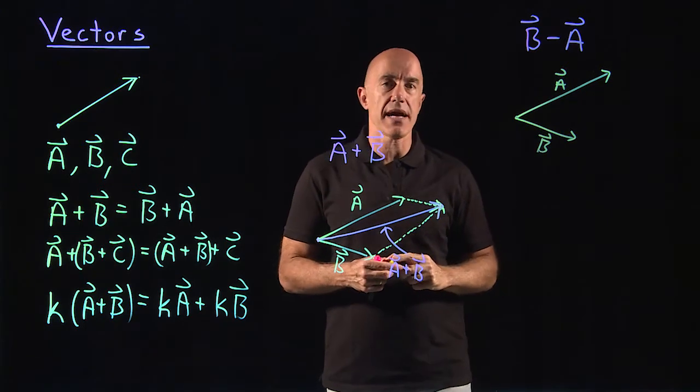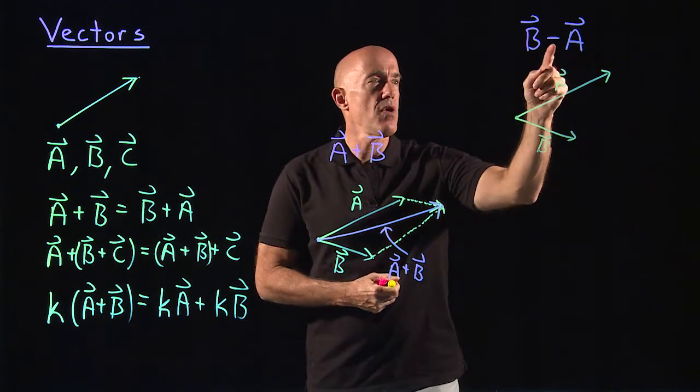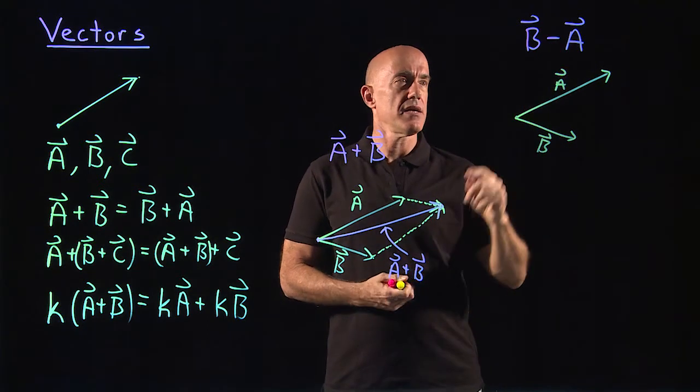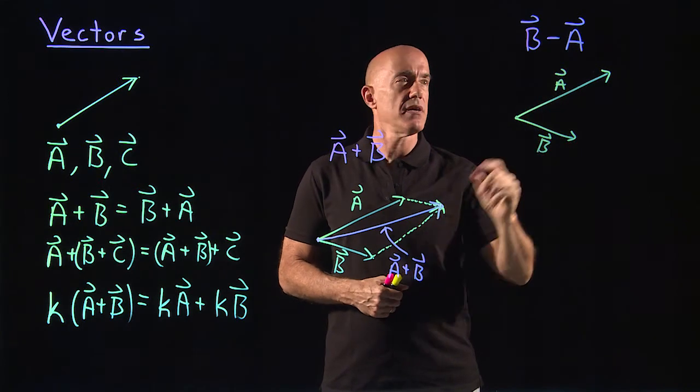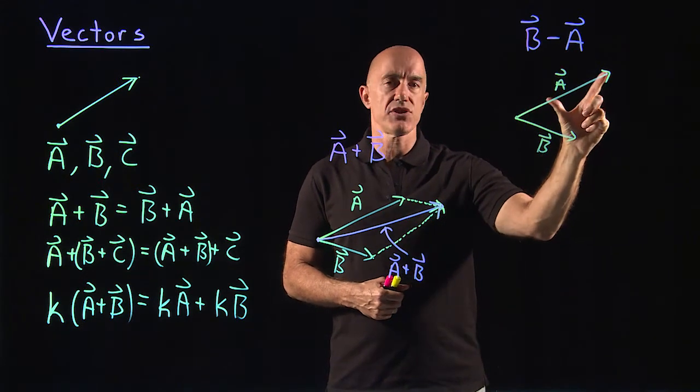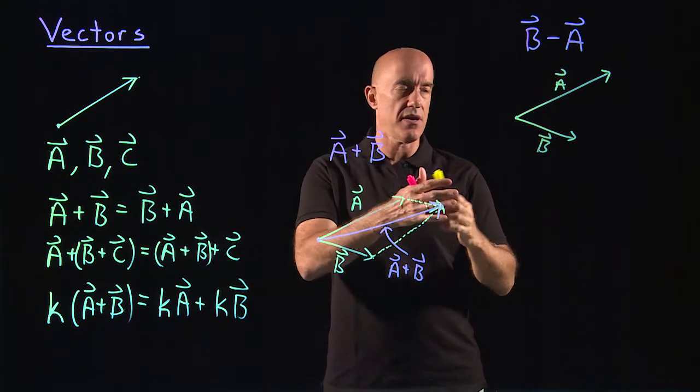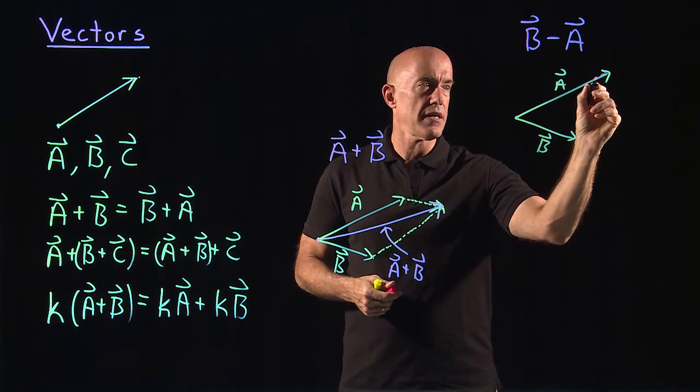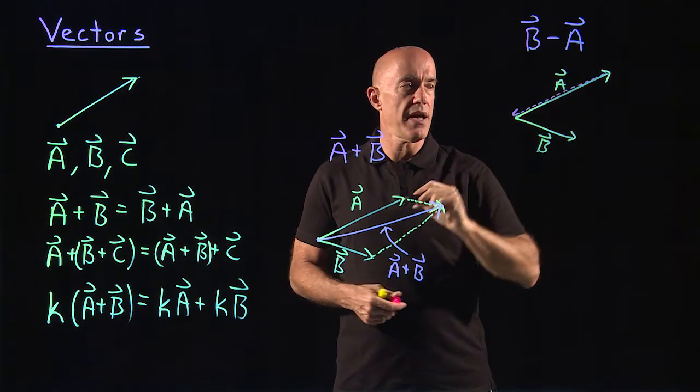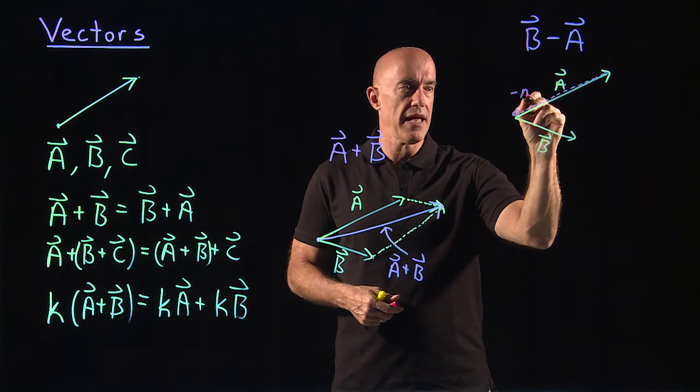So what is b minus a? Well, minus a is just the a vector pointing in the opposite direction. So the minus sign just flips the direction of the a vector. So minus a is going to be looking this way. This is minus a.